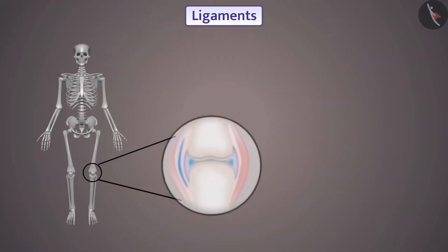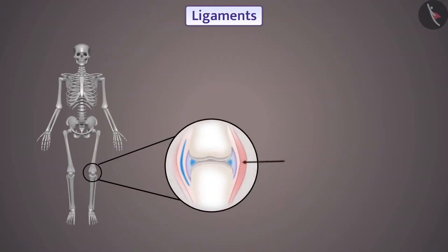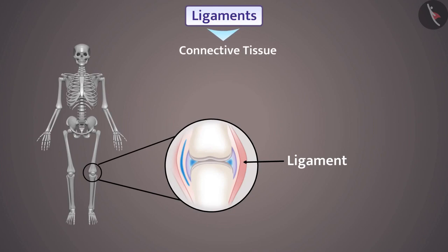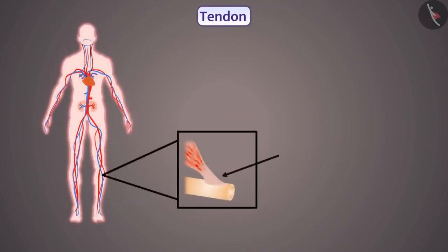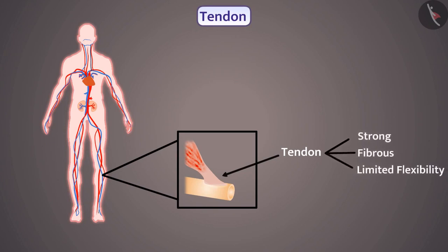The two bones are connected with each other by the ligament. Therefore, ligament is also a type of connective tissue. There is very little matrix in the ligament, and it is very elastic and strong. The bones and muscles are connected with each other by tendon. Therefore, the tendon is also a connective tissue. It is strong, fibrous, and a tissue with limited flexibility.